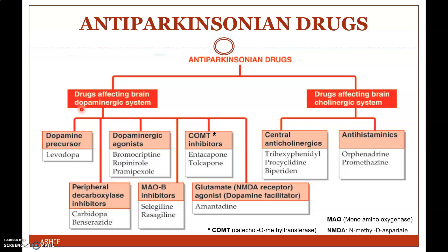Drugs affecting the brain cholinergic system include central anticholinergics like trihexyphenidyl, procyclidine, and biperiden, as well as antihistamines that inhibit histamine receptors like orphenadrine and promethazine. This completes the classification of anti-Parkinsonian drugs.